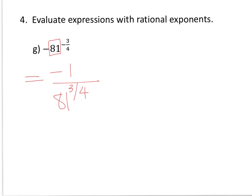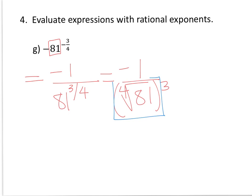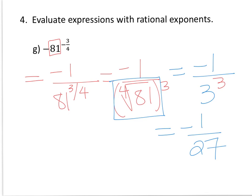Now we can change it to a radical expression — that would be negative 1 over the fourth root of 81 raised to the third power. The fourth root of 81 equals 3, so we have 3 to the third power in the denominator. And 3 to the third power is 27, so the final answer is negative 1 over 27.